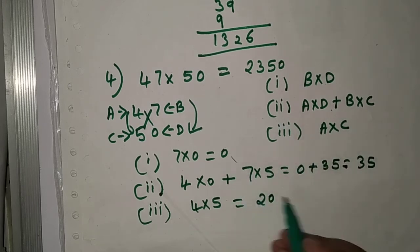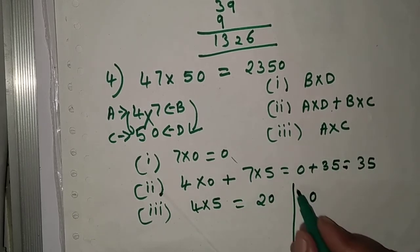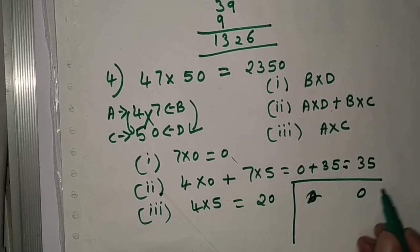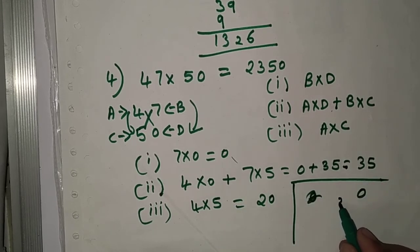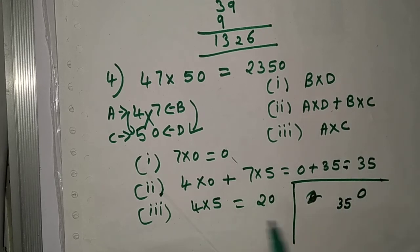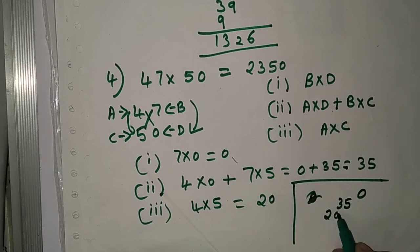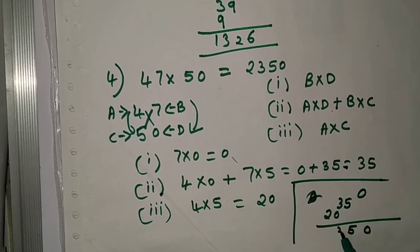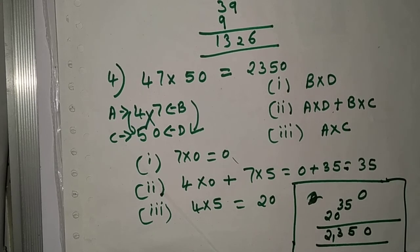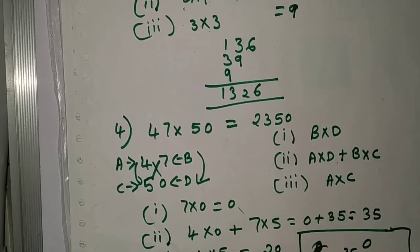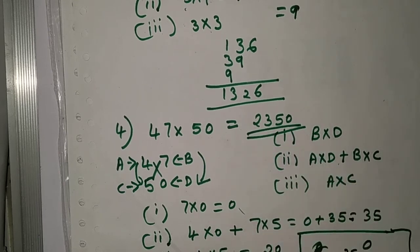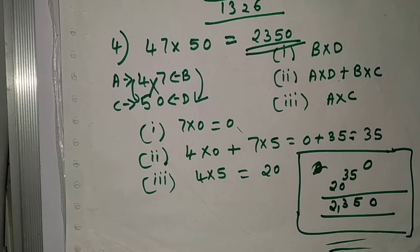Adding all results in order — 0 first, then 35, then 20 — gives us 0, then 5, then 3, then 2, that is 2350. Our answer is confirmed: 47 into 50 equals 2350. This is the multiplication of two-digit numbers using the three-step method.